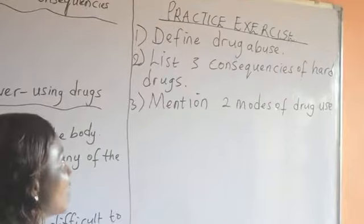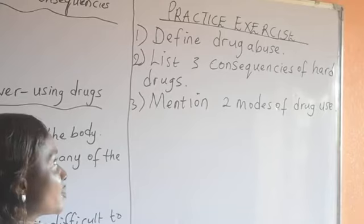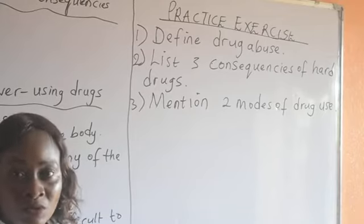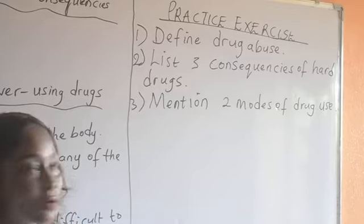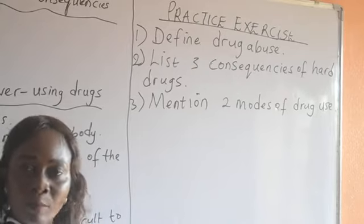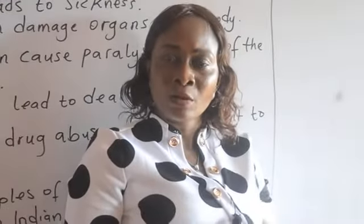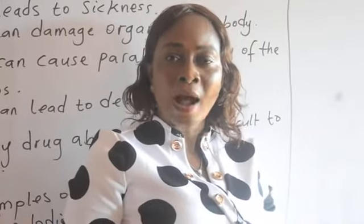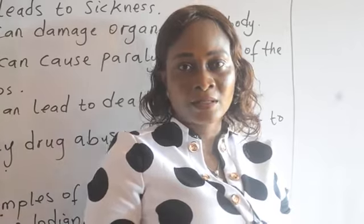Let's take a look at our practice exercise. Number one: define drug abuse. Number two: list three consequences of hard drugs. Number three: mention two modes of drug use. Please, basic five and primary five, do not forget your exams are around the corner. Always read your books — make sure you read your Ugo Siu book and all your books and prepare well for your exams. I wish you success. Have a great day. Bye.